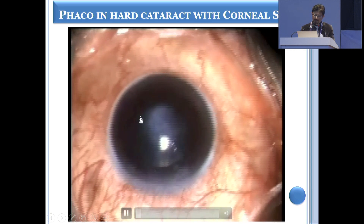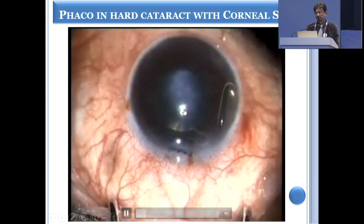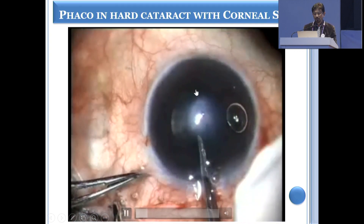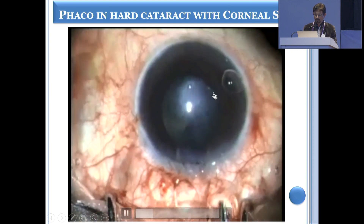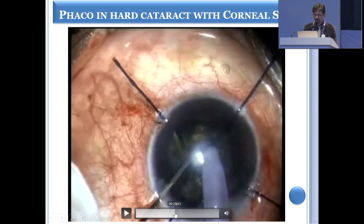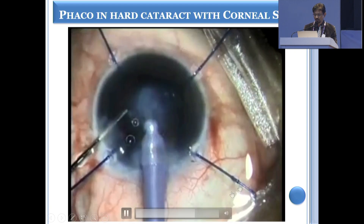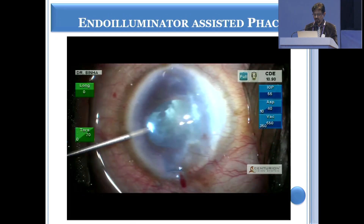Sometimes you have an opacity which is small and if the cataract is not very hard, you can manage without enlarging the pupil. But for a black cataract, wherein it is very difficult, it's better to put iris hooks to improve visualization. Another technique: if you have a central opacity, you can do a slightly eccentric — not exactly in the periphery, but slightly eccentric — crater, and that helps you in chopping.